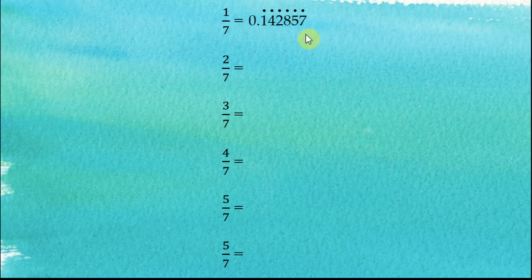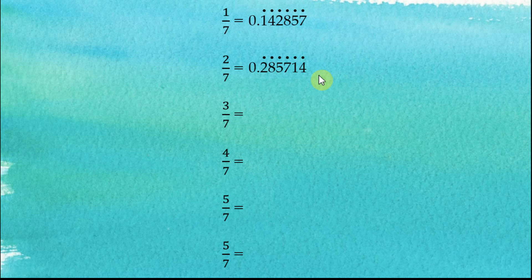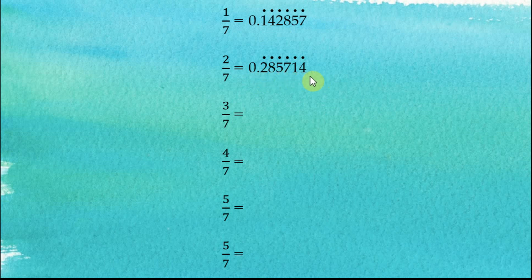This is important for memorizing the decimal numbers for the other sevenths fractions. Let's continue with 2 over 7. 2 over 7 is equal to 0.285714 recurring. You should realize that these are the same group of digits as in 1 over 7, just starting with 2. When we start with 2, it is followed by 8, 5, 7, then back to 1, 4. So the sequence is 2, 8, 5, 7, 1, 4 — exactly the same cyclic sequence. They are the same group of numbers, just starting with a different digit.